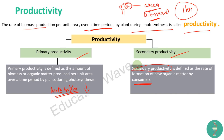Secondary productivity hamesha tabhi hogi jab aapke paas primary productivity hogi. Secondary productivity jo hai woh dependent hoti hai primary productivity pe, lekin primary productivity is independent of secondary productivity. Agar inmen difference aaye to aap likh sakte hain ki secondary productivity dependent hoti hai primary productivity ke, kyunki ise producers ki zaroorat hai. Aur primary productivity mein use kisi ki zaroorat nahi hai - only sunlight. Particular area mein woh jo bhi biomass production ke liye chahiye us pe hi dependent hai, na ki secondary productivity pe.